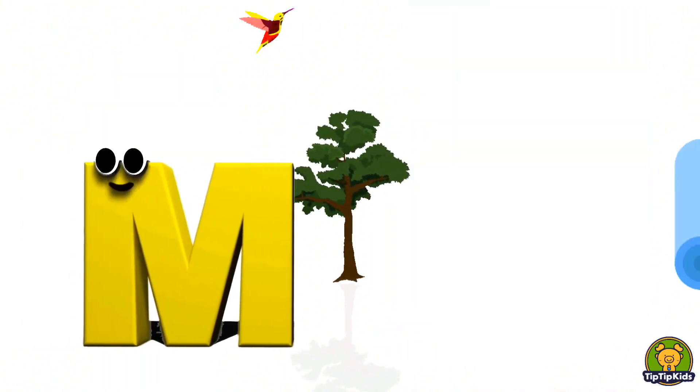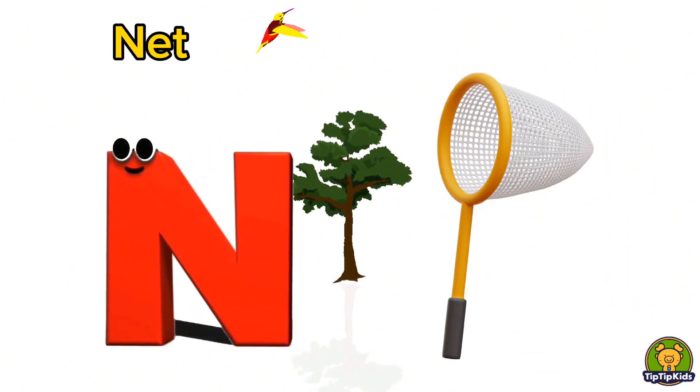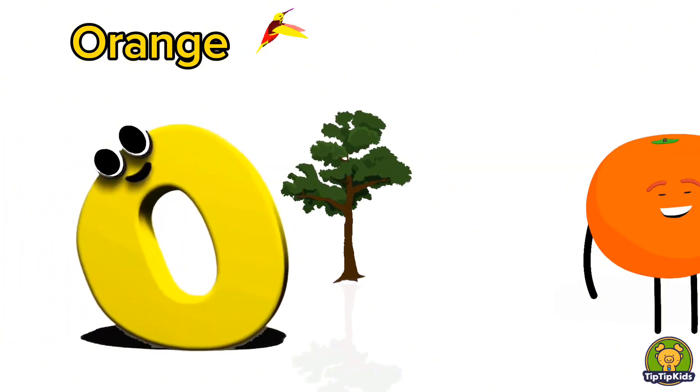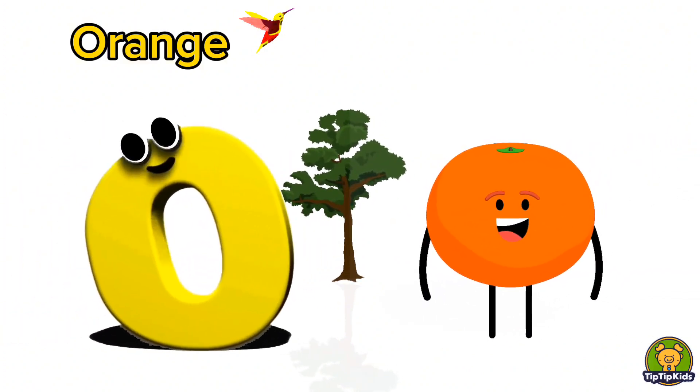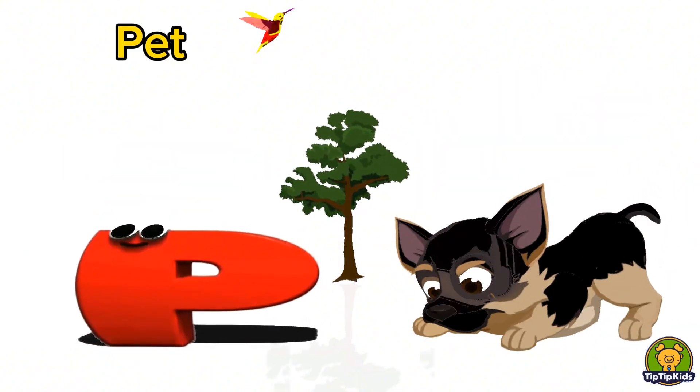M is for Mat, M-M-Mat. N is for Net, N-N-Net. O is for Orange, O-O-Orange. P is for Pet, P-P-Pet.